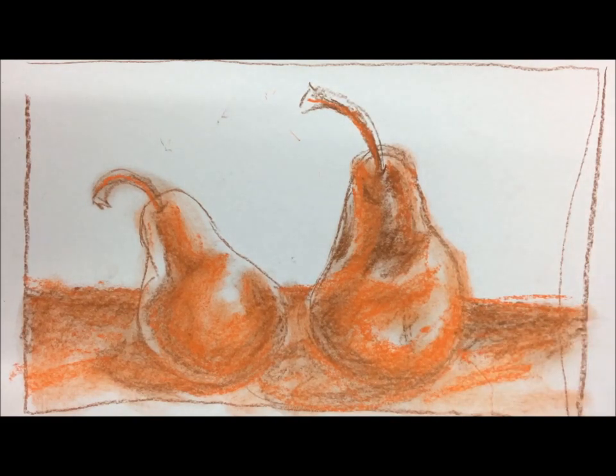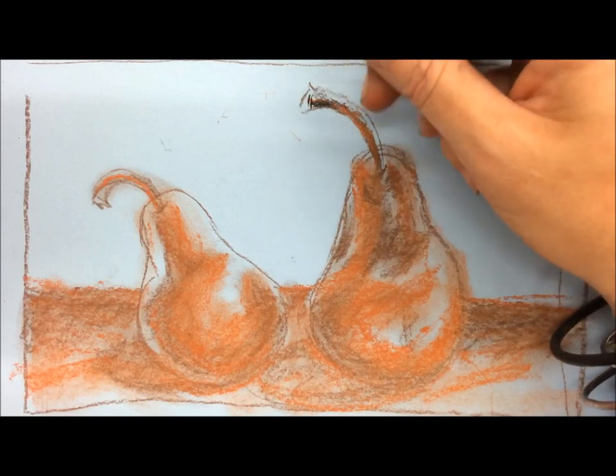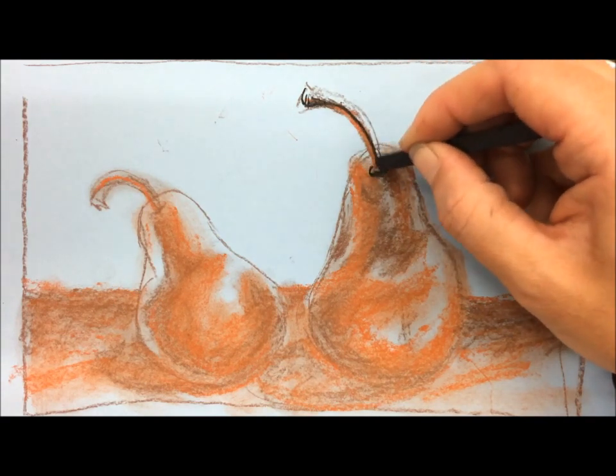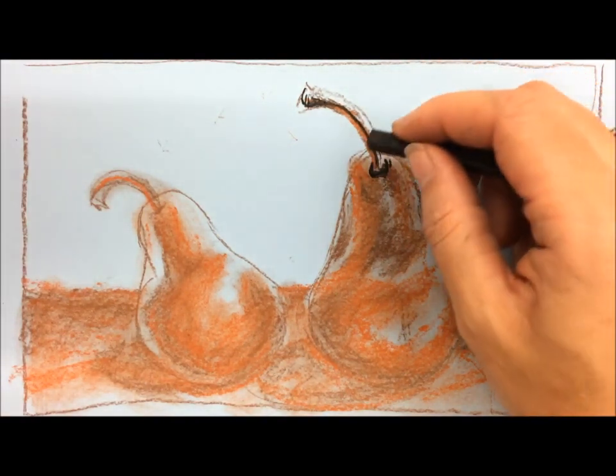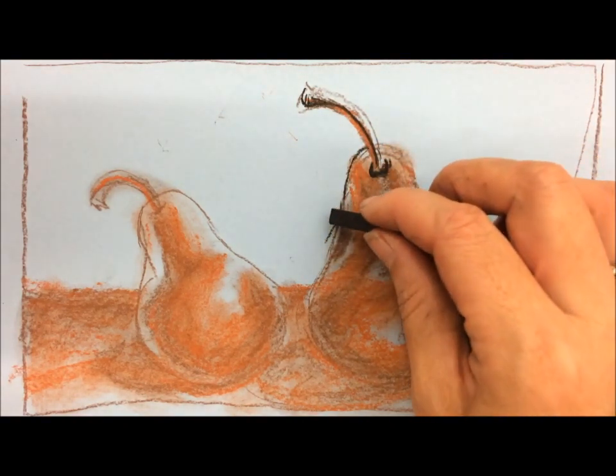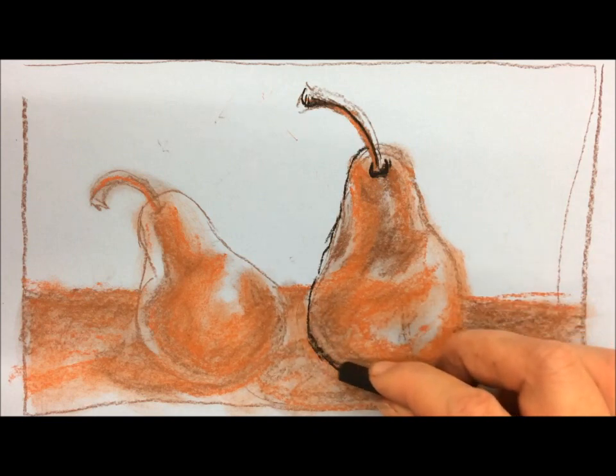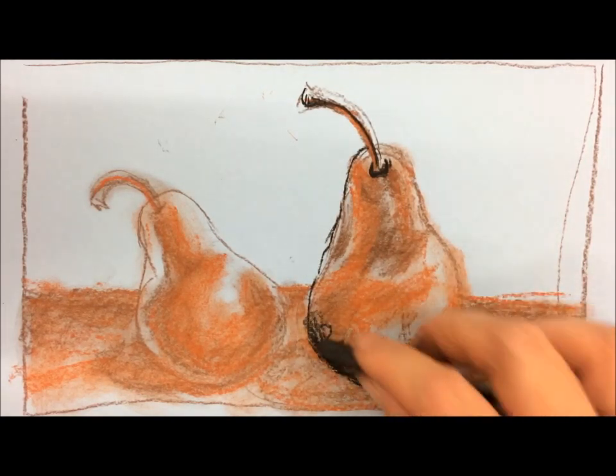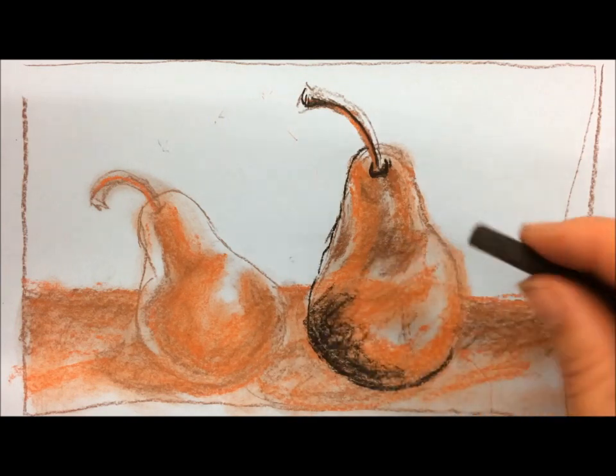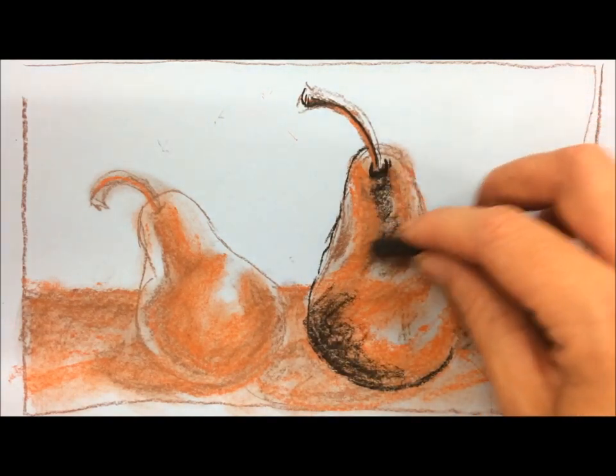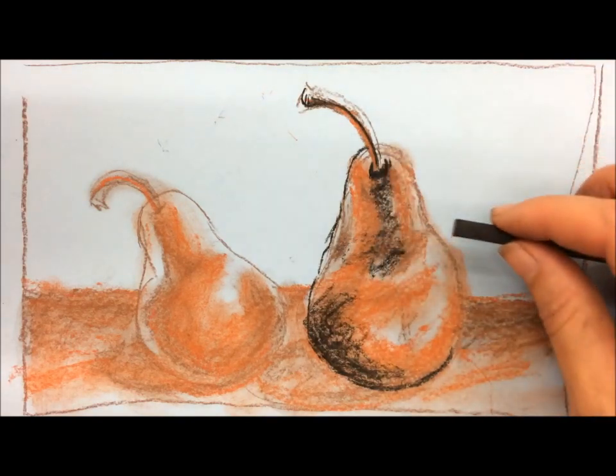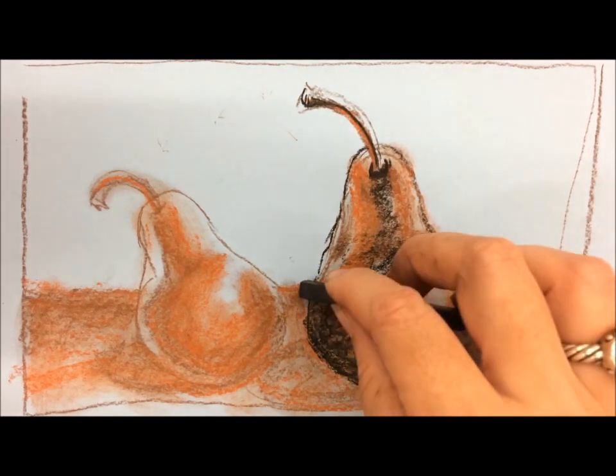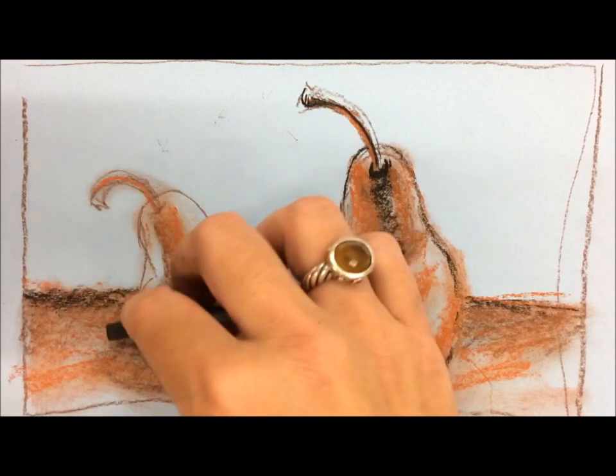Now I'm going to start putting my darkest darks in there. Because it's Conté crayon and fairly stiff, you can get really nice tight lines and they're not really going to move. They'll move a little bit, but a lot of it is going to stay exactly where it is.